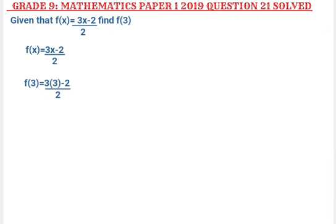So we are going to multiply 3 by 3 there on top. So f of 3 is equal to 3 times 3, which gives us 9, minus 2, over 2.